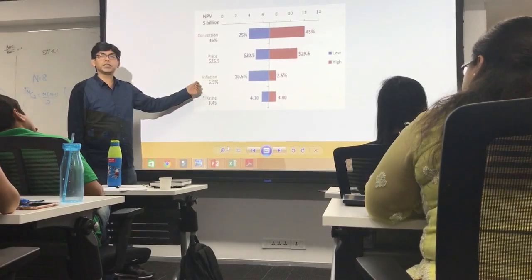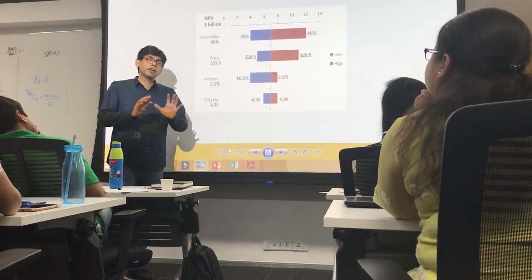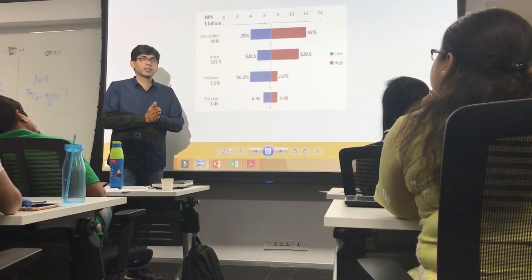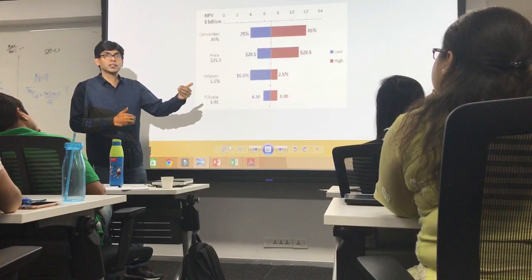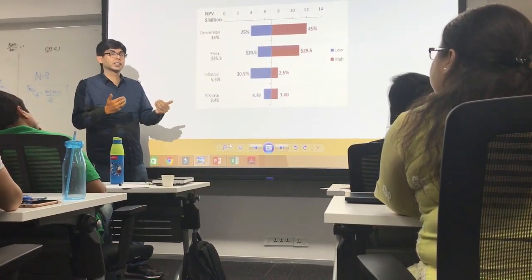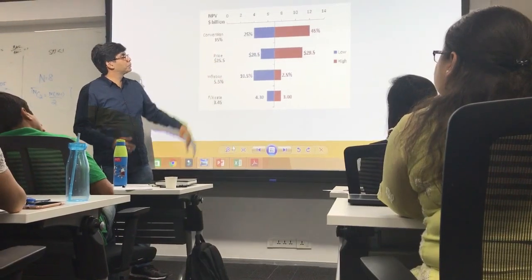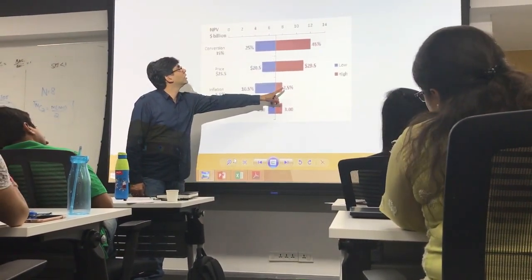Now let's talk about inflation. If let's say inflation is 5.5%, I will hit the target. If inflation increases, what will happen? Losses. It will lead to losses because cost will increase. If inflation increases, my profitability will go down. If it increases to 10.5%, my profitability will decrease and it will go down to 4 million USD.